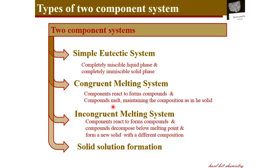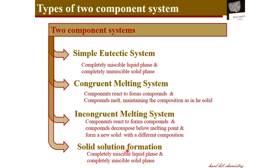Solid solutions are systems in which the two components are completely miscible in both the liquid phase and the solid phase — like an alloy. So the four main types of two-component systems are: simple eutectic with no compound formation; congruent and non-congruent melting systems where a compound forms between A and B; and solid solutions where two components are miscible in both phases.